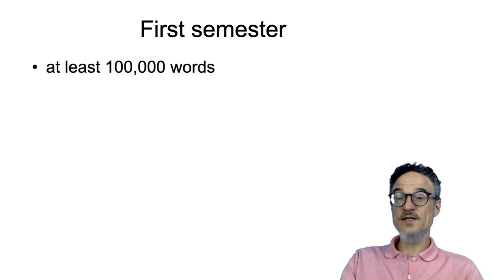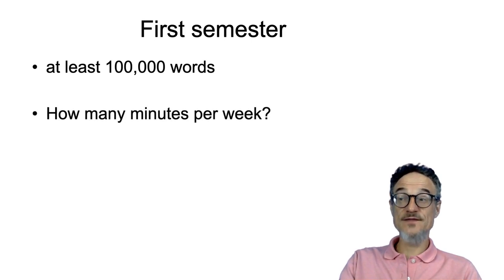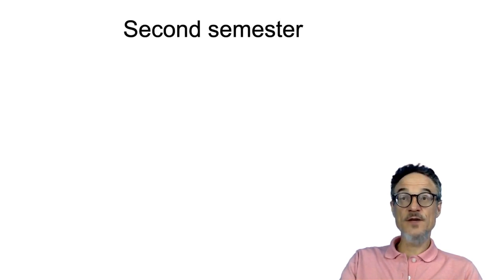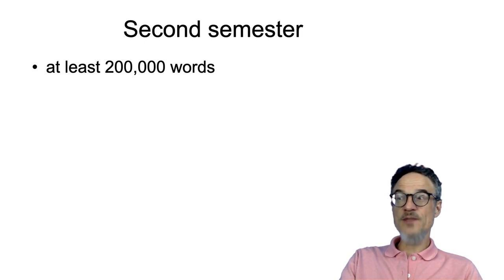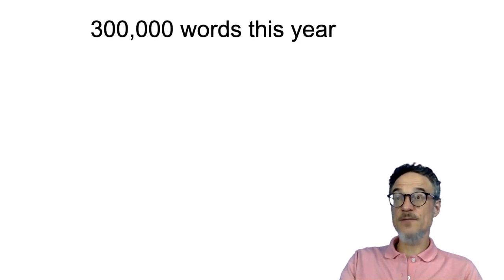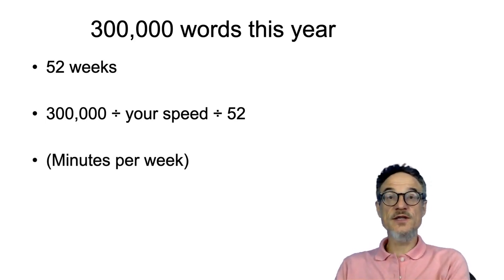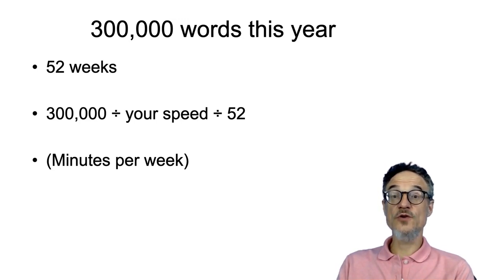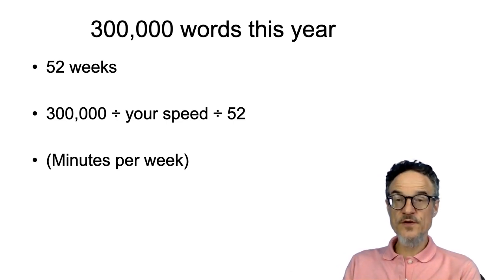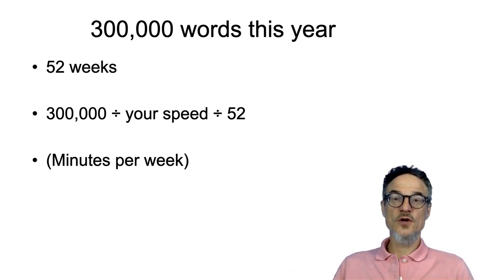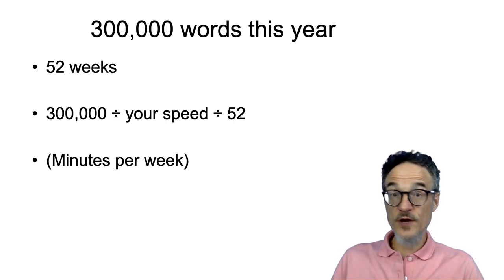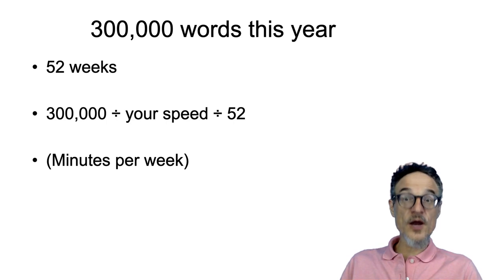For the first semester, I expect people to read at least 100,000 words. You can work out how many minutes per week that means by dividing by your reading speed and by the number of weeks. I would expect at least 200,000 words in the second semester and something like 300,000 words in a year. There are 52 weeks in a year, so you can work out how many minutes per week you need. It's not many minutes — if you think about how many minutes you spend on social media or watching YouTube, you could easily spend that time reading, and then you wouldn't need to worry about practising for your English tests.